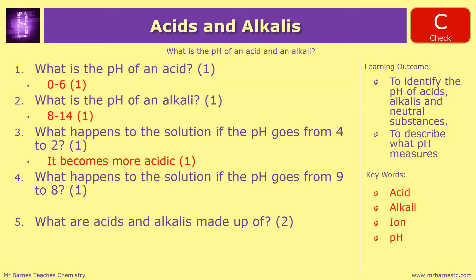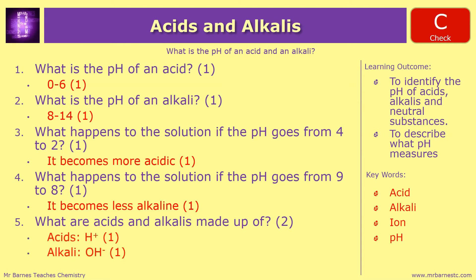Question 4: what happens to the solution if the pH goes from 9 to 8? This isn't becoming more alkaline, and it's not becoming more acidic — it's becoming less alkaline. And then finally for question 5: what are acids and alkalis made up of? Acids are H plus ions, and alkalis are OH minus ions.